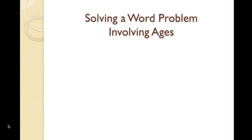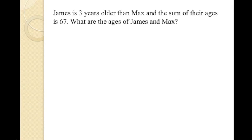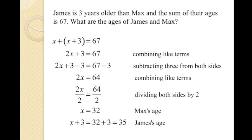This word problem involves ages. The sentence reads: James is three years older than Max and the sum of their ages is 67. What are the ages of James and Max? Represent Max's age as x and James's age as x plus 3 since the sentence indicates James is three years older than Max. We can write the equation as x plus (x plus 3) equals 67 since both their ages when added together equals 67.